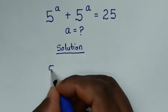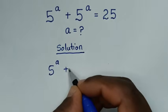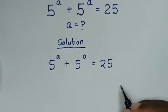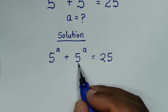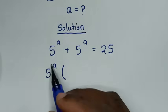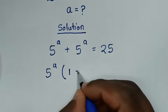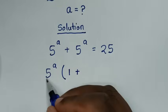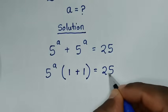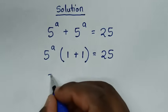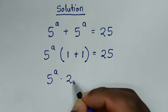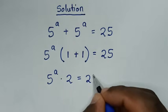From our problem, 5 power a plus 5 power a is equal to 25. Here 5 power a is common, so we take out 5 power a from the bracket. Then it will be 5 power a times 1 plus 1, which is 2, is equal to 25.